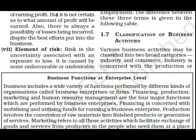The seventh feature is the element of risk. Business is every time surrounded by various risks. Risk and uncertainty are related — it is because of risk that there is uncertainty of return. Let's see how many types of risks there can be.